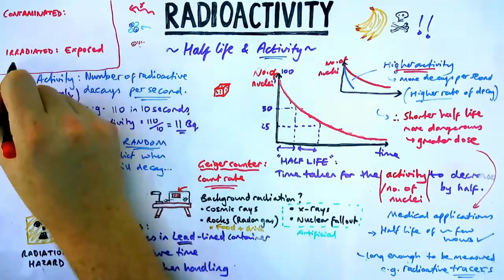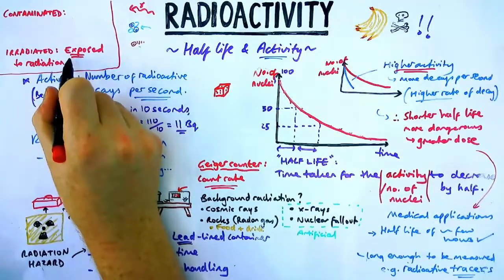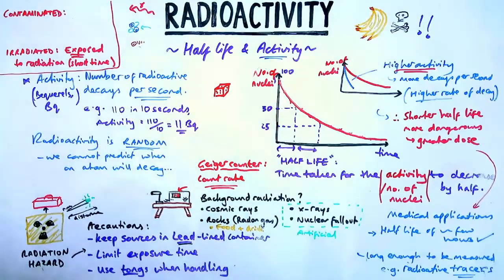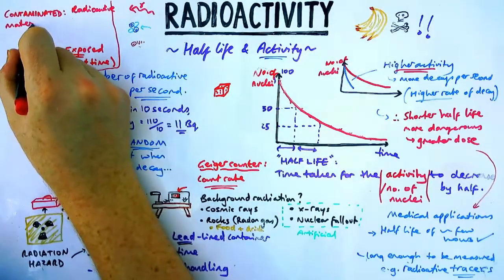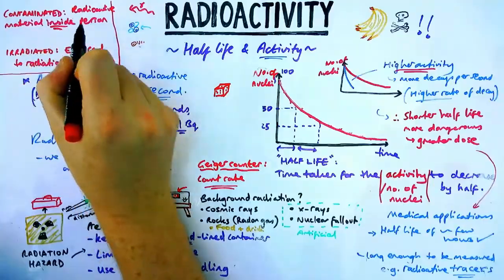Now irradiated is less serious. It means you're exposed to radiation. An example of that would be an x-ray. So that means you're exposed for a short time. Contaminated means that radioactive material is present inside a person or an object. So it doesn't have to be a person. It could be the ground, could be water, whatever. So you need to know those definitions.